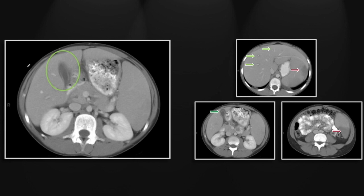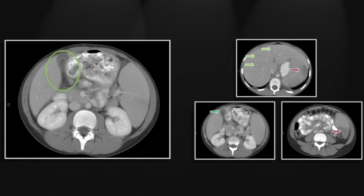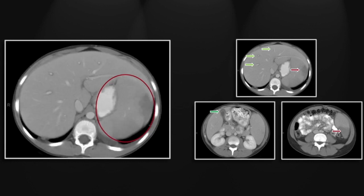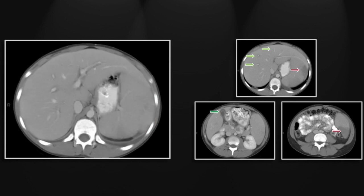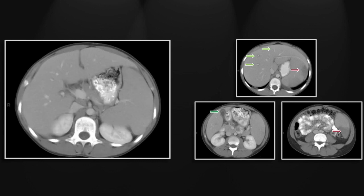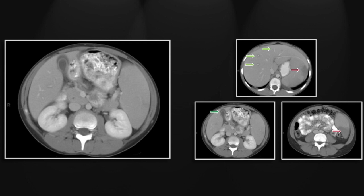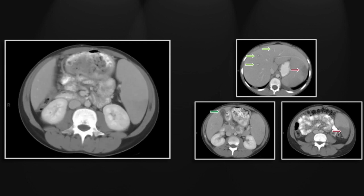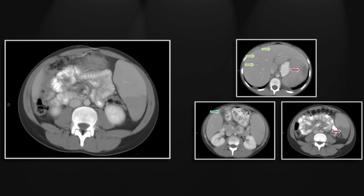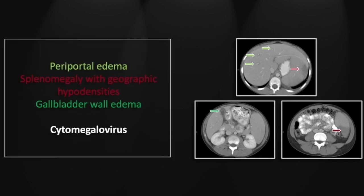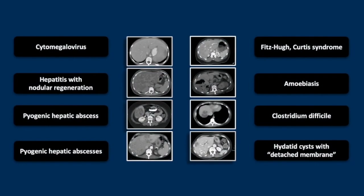On the cine, you can appreciate the extent of that gallbladder wall edema, and we get another look at the marked splenomegaly and the multifocal geographic hypodensities, both superiorly and inferiorly, denoting splenic infarcts. So that is a case of cytomegalovirus infection: periportal edema, gallbladder wall edema, splenomegaly, and associated infarcts.